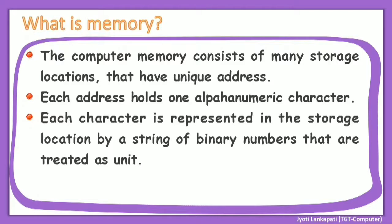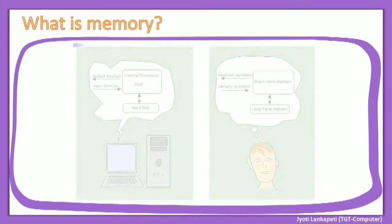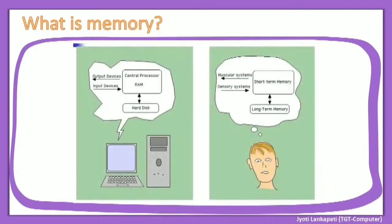Each character is represented in the storage location by a string of binary numbers treated as a unit. Since the computer understands only binary language, it stores data in the form of binary numbers — that is, 0 and 1. Now let's clarify the concept with the help of a figure. We as humans have two types of memory: short-term memory and long-term memory.